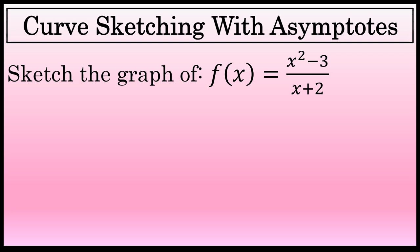Rational functions such as f of x equals x squared minus 3 over x plus 2 often include asymptotes. The graph of this function does. In this video I'll describe four steps that can be used to draw the graph of rational functions, including how to deal with asymptotes.